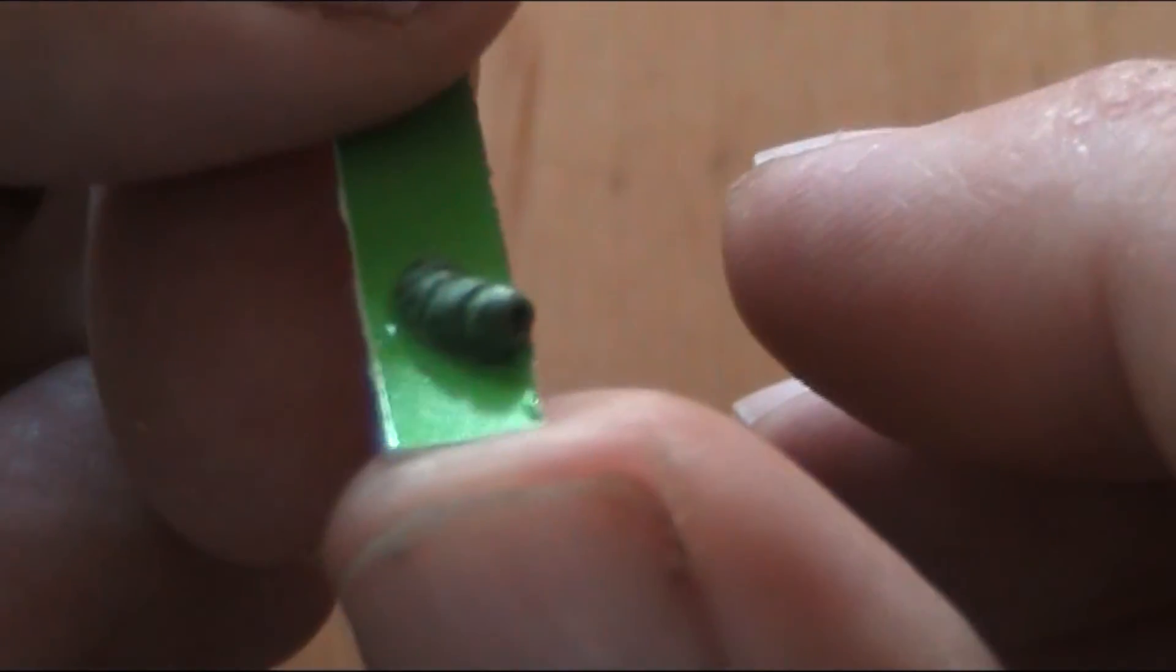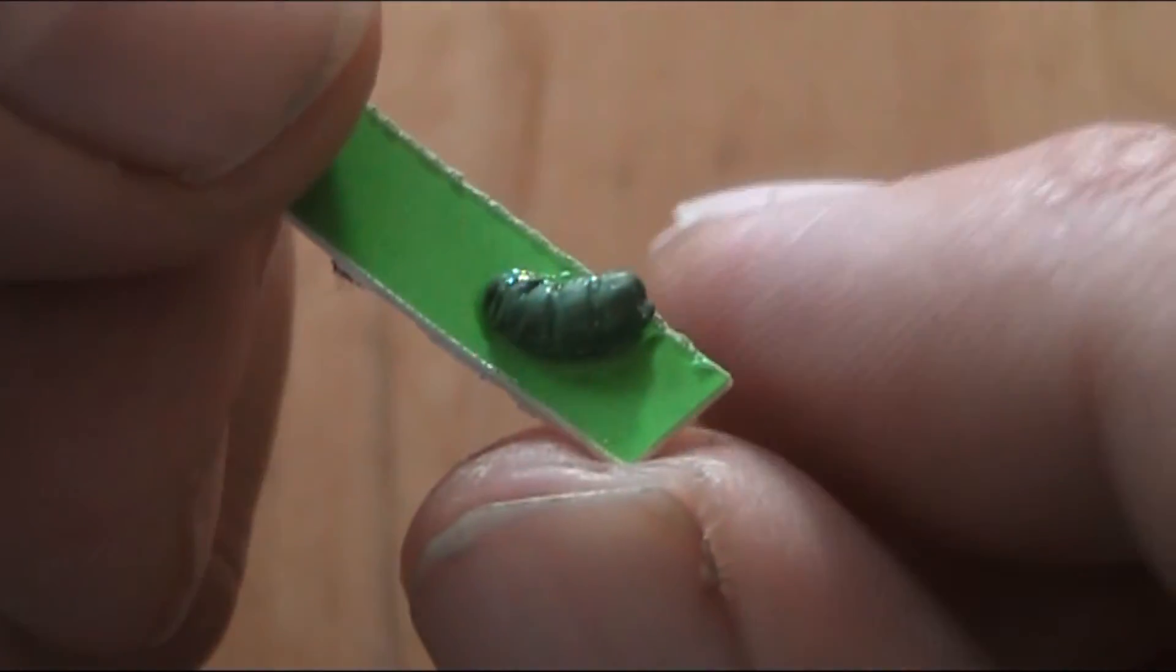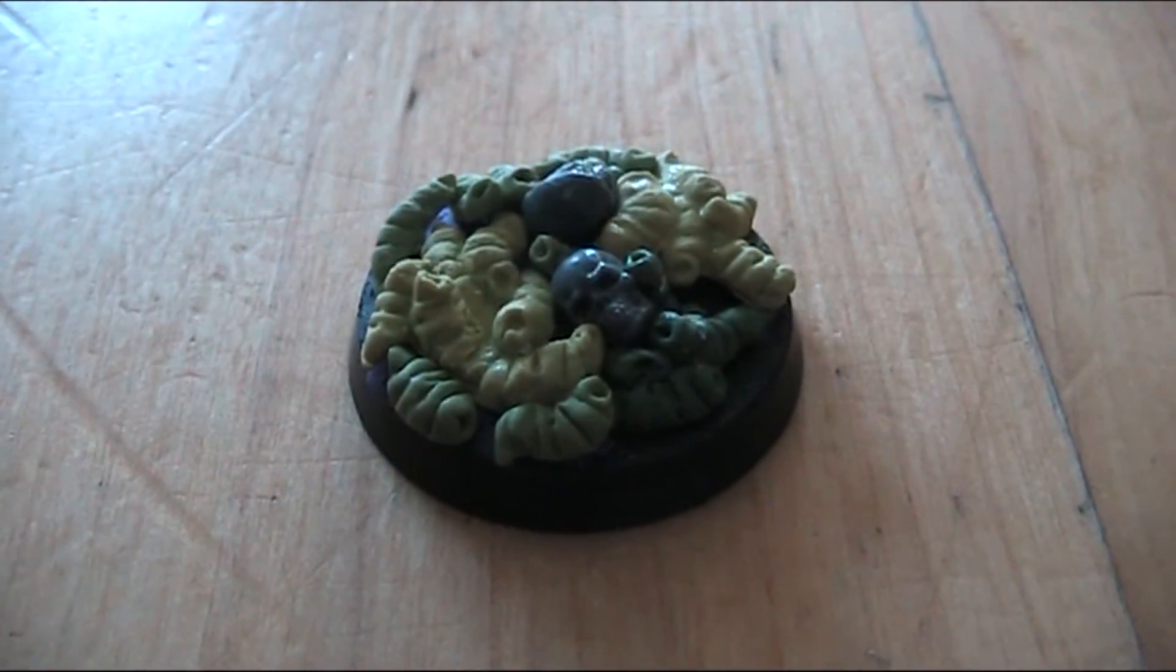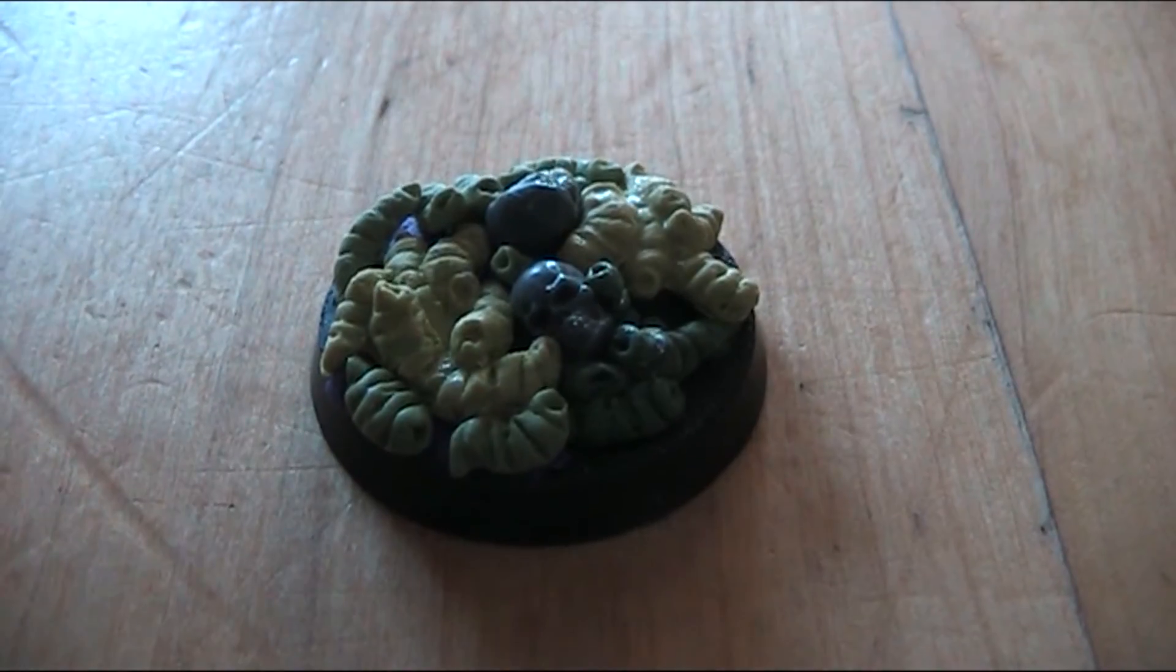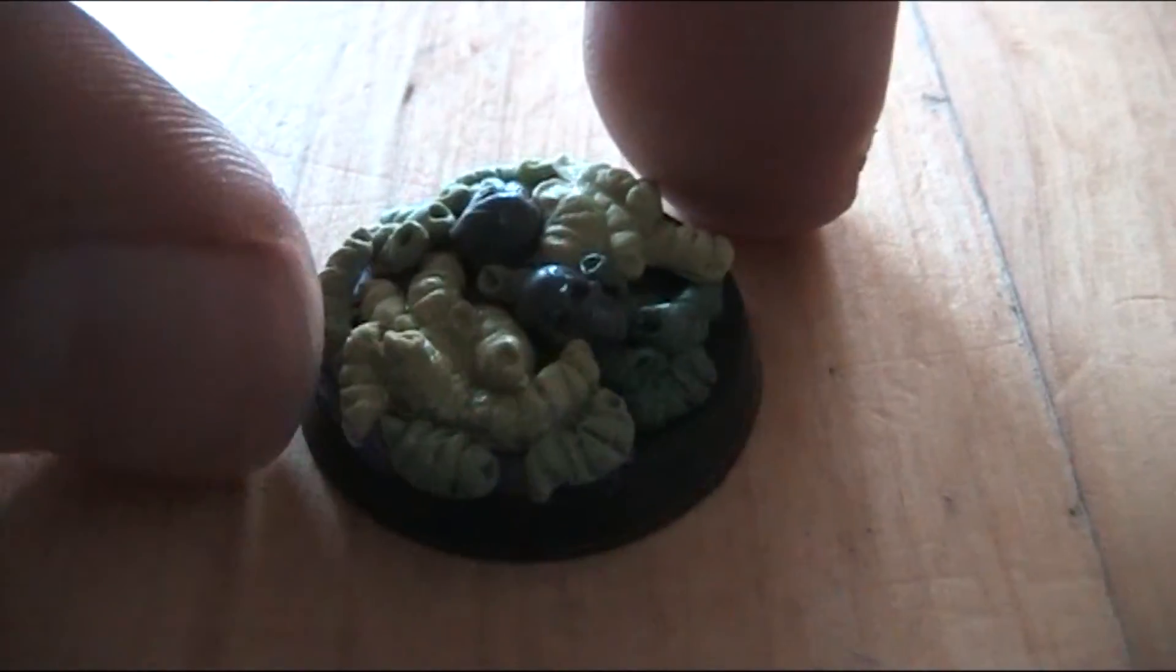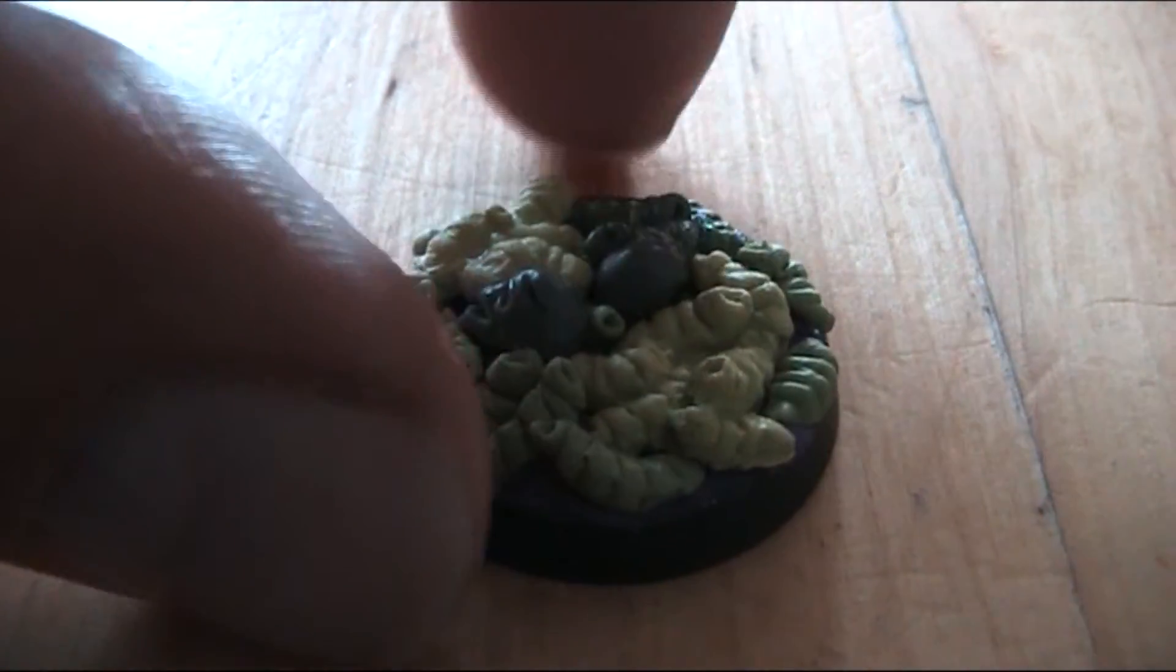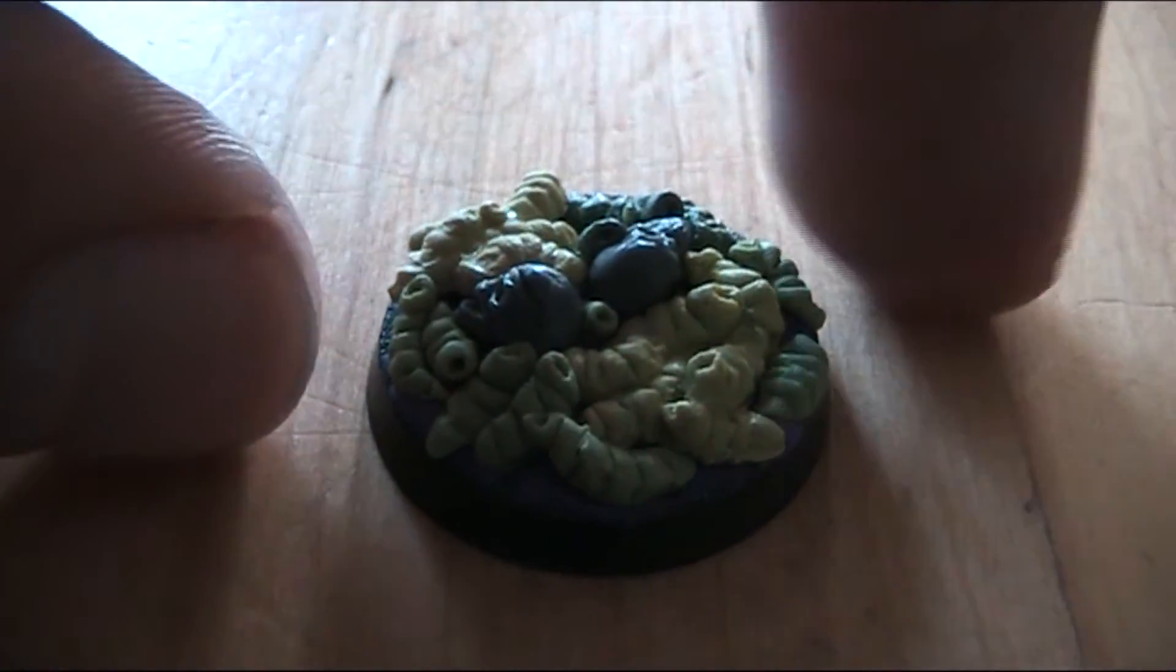And that's it. Make some copies from these little guys and place them on a base. Maybe place a skull or some bones here and there and you are ready. I hope you had fun with this easy sculpting tutorial and like and share this video.